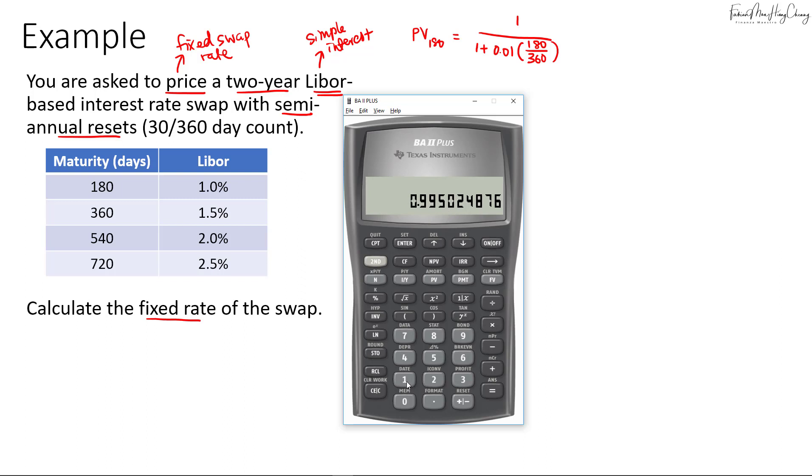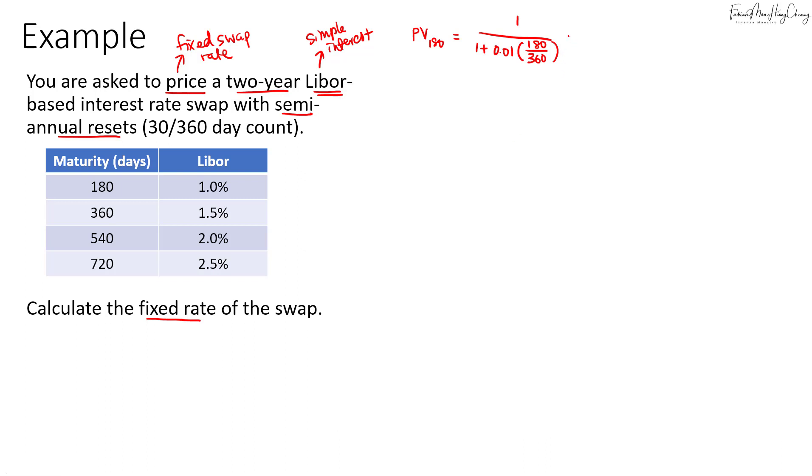So that's 1.005 and then we will invert it by pressing 1 over X so that gives us 0.9950. So I can save this in button 1. So I'll record this is 0.9950.